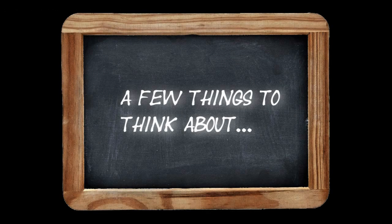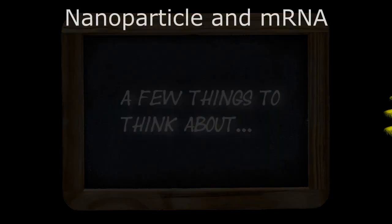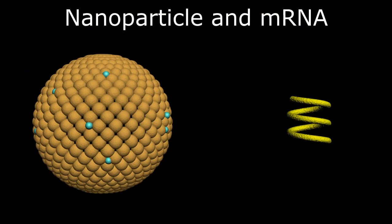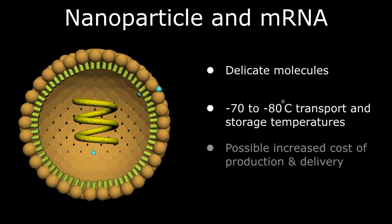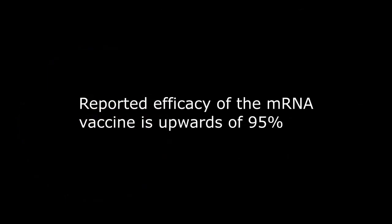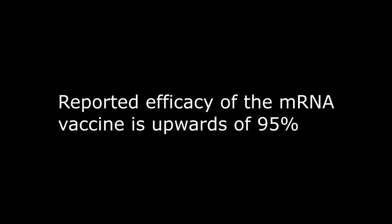As we wrap this up, a few things to consider. The mRNA and lipid nanoparticle transport molecules are quite delicate, requiring transport and storage at ultra-low temperatures of about minus 70 to minus 80 degrees Celsius, likely increasing the cost of production and delivery. The reported efficacy for these types of vaccines has been upwards of 95 percent.